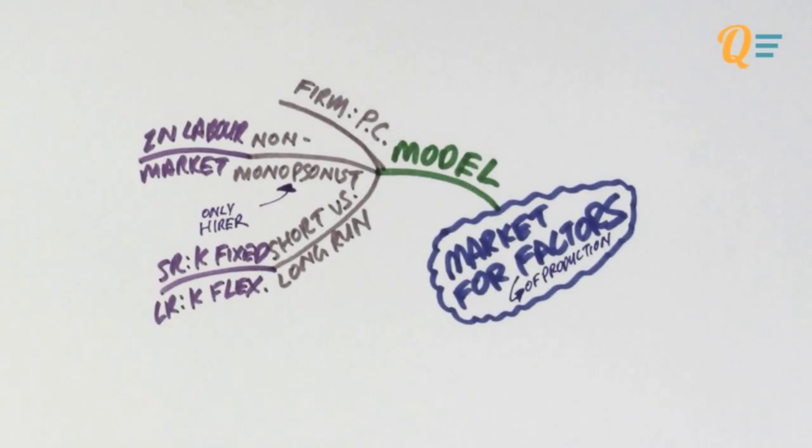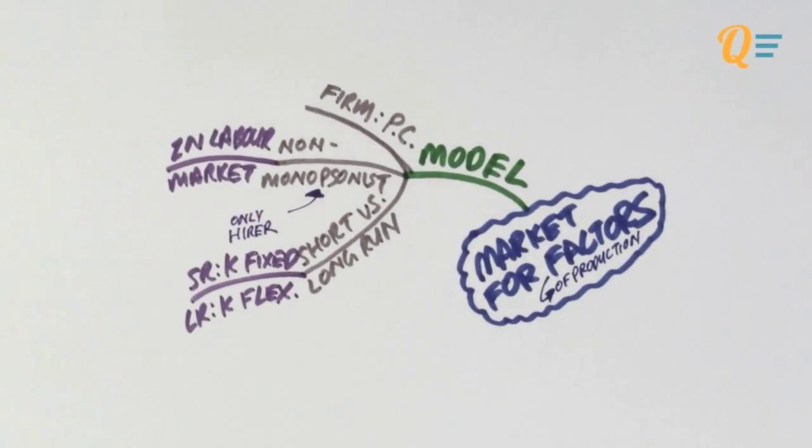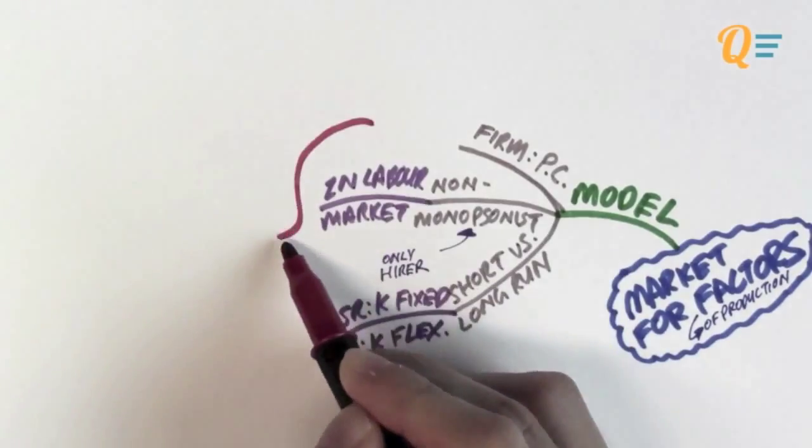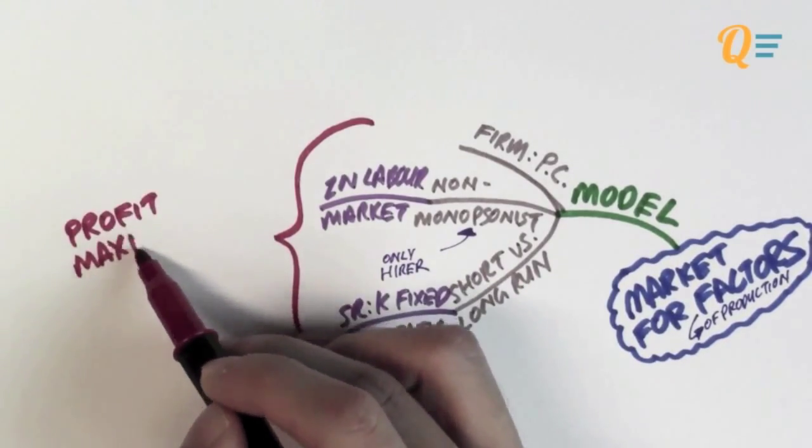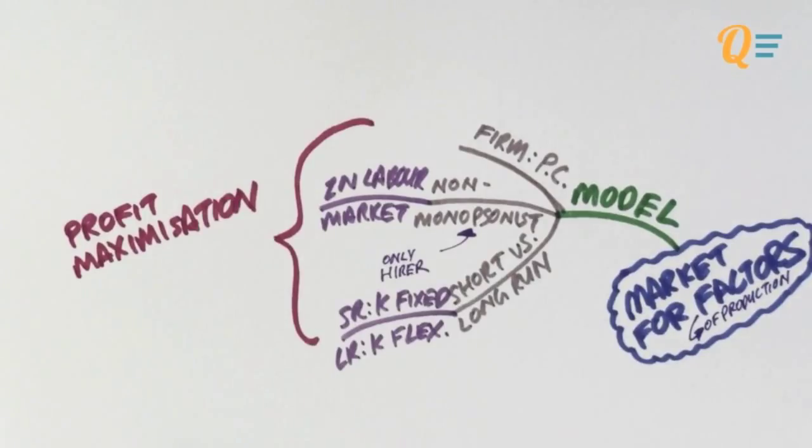Our job here is to actually analyse how do firms demand for factors. That will be the focus of this video. How do firms demand for labour? We've seen how consumers demand for goods. Now, we need to see how the firms demand for labour.